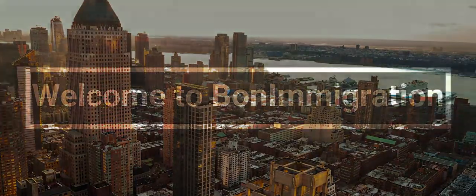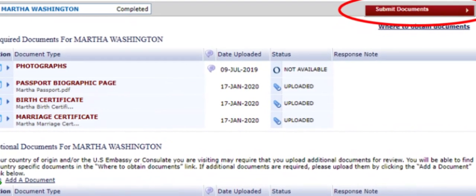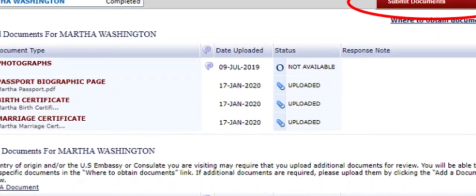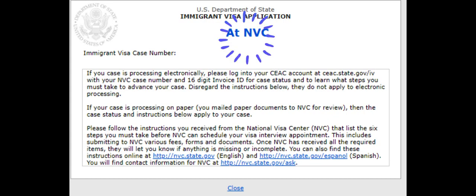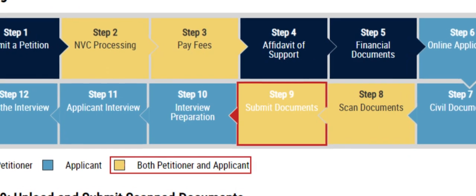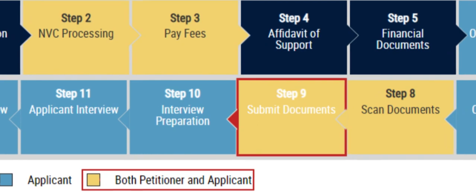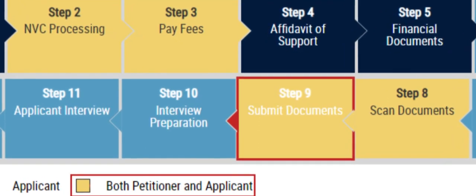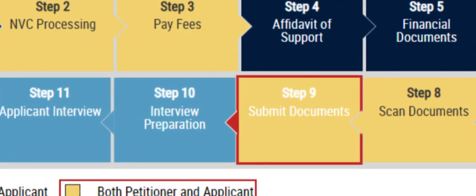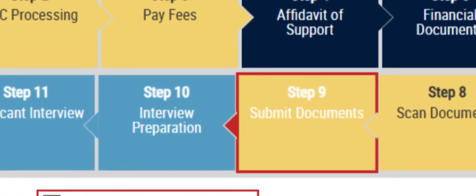Hi, welcome to Bond Immigration channel. After immigrant visa documents are scanned and submitted, your case may seem to get stuck again in the same 'at NVC' status. Today, I will slice and dice into step 9 of the 12-step long immigrant visa application process — the documents submission step — and tell you when your documents can be reviewed by NVC and move to the next documentarily qualified state.